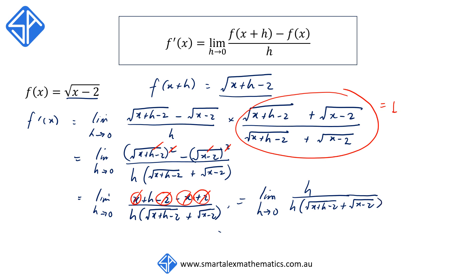Now the two h's on the top and bottom cancel out, and when we substitute h equals 0, we end up with 1 over 2 times the square root of x minus 2. And this is in fact the derivative of the function f of x equals the square root of x minus 2.